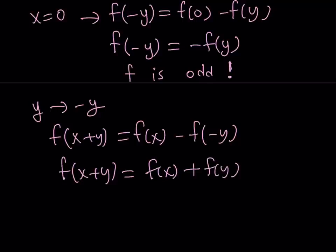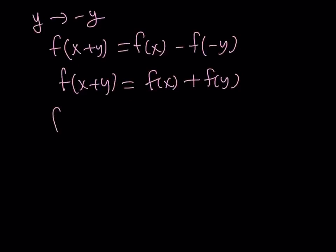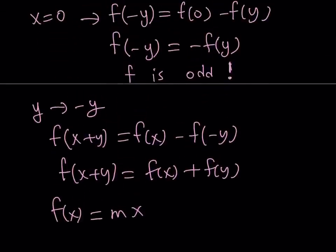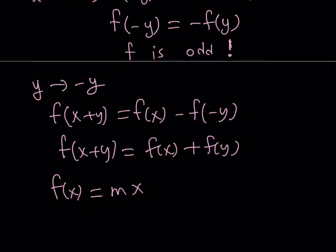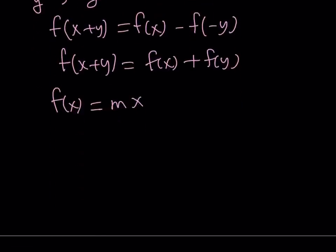And this is the well-known Cauchy equation. You should know that f of x can be written as mx from here. You can verify this with f of 0. If you replace x with 0, you're going to get f of 0 equals 0. If you replace x with negative x, you're going to get the opposite of f of x. That also shows this is an odd function.